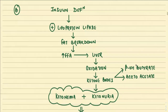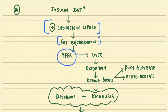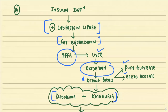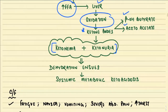The second important aspect: insulin deficiency leads to a catabolic state, stimulating lipoprotein lipase, causing breakdown of fat and releasing excessive free fatty acids into the circulation. These go into the liver, undergo fatty acid oxidation, and are converted into ketone bodies — most importantly beta-hydroxybutyric acid and acetoacetic acid. This is responsible for ketonemia and ketonuria. Ketonemia means presence of ketone bodies in blood; ketonuria means presence in urine.